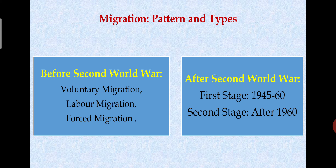The labor migrations are mostly of three types: indentured labor migration, the slave trade, and voluntary labor migration. The slave trade is also well-known as a form of labor migration.